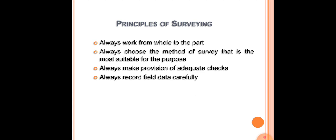The third principle is to make provision for adequate checks. Whenever you take measurements, we have to ensure that the measured quantities are correct by adopting some checks. The fourth principle is that whenever data are recorded, it has to always be done very carefully. The measurements taken will be directly recorded in the field itself, and we have to see to it that it is done carefully with no errors.